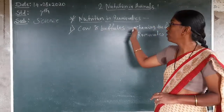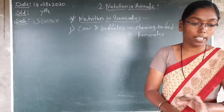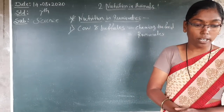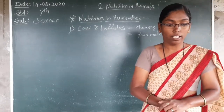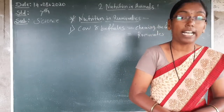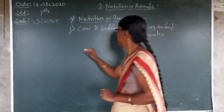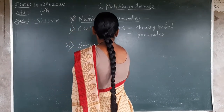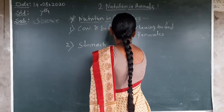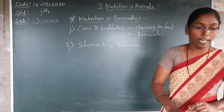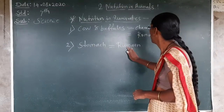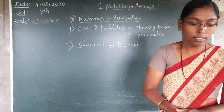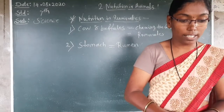So your concept is set: nutrition in ruminants. Examples — don't forget: cows and buffaloes. Second point: the animal eats the food and stores it in a part of the stomach called the rumen. Why is that name there? The food will be stored in the stomach, and this is called the rumen.